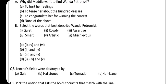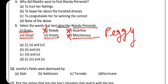Question B: Select the word that best describes Wanda Petronski. She is quiet in nature — not rowdy (goons ke liye word use hota hai). Assertive means confident — but Wanda was not confident during school. Option 4: yes, she was smart. Option 5: yes, she was artistic — she had made a hundred dresses. She was not mischievous — Peggy was the mischievous one. So options 1, 4 and 5 are correct — answer is option D.